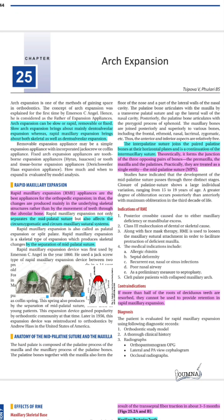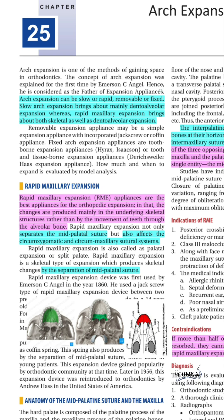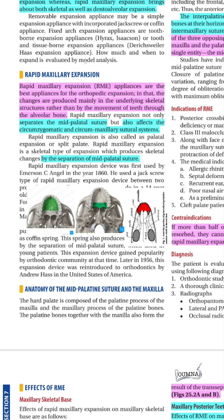This episode will discuss arch expansion and tooth extraction during orthodontic treatment. Arch expansion can be slow or rapid, using removable or fixed appliances. Slow arch expansion brings about mainly dental alveolar expansion, whereas rapid maxillary expansion brings about skeletal as well as dental alveolar expansion. We will see when each of them is indicated and what their advantages and disadvantages are.